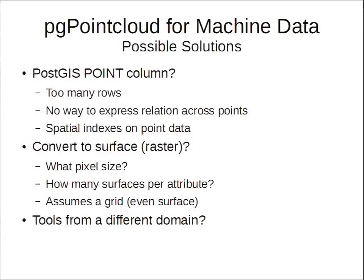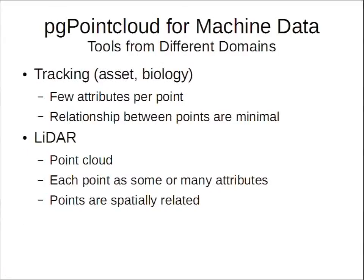For me, I ended up looking at tools from different domains. First choice was asset tracking — exactly what UPS and large trucking firms do. From biology's perspective, it's about tracking an animal — presence or absence. But the problem is there's not a lot of attributes per point. You don't have a nonstop data stream of sensor data attached. The relationship between points is minimal. So that wasn't the right fit.